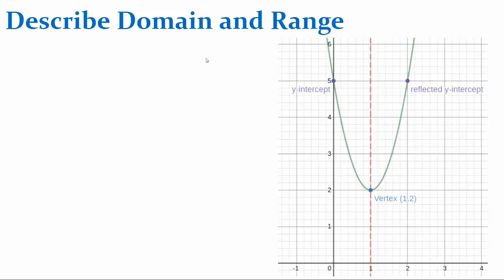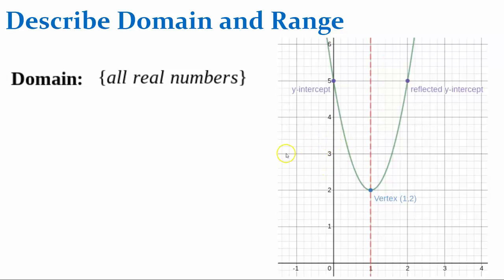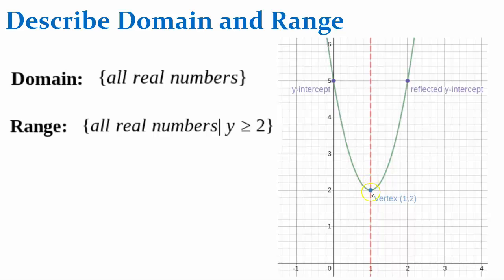Let's talk about the domain and range of the function we just graphed. The domain is all real numbers — you can use any x value as an input and get an output. The range is all real numbers such that y is greater than or equal to 2. The value 2 is the lowest y value you can get, so all outputs will be 2 or greater. There are no y values less than 2 that satisfy this function. We also call 2 the minimum value of the function.